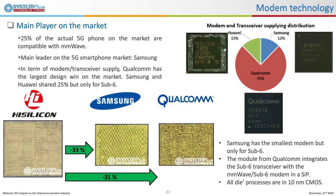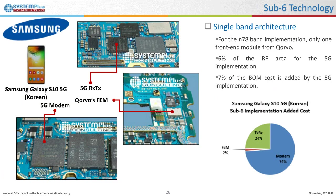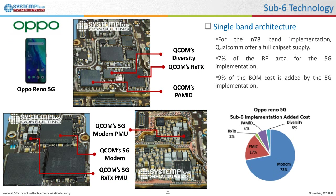Different suppliers mean different approaches. The Galaxy S10 carrier version is compatible with only one sub-6 band based on Samsung Exynos 5100 series as the modem. It integrates a dedicated transceiver and an integrated front-end module from Qorvo. In terms of area, it occupies 6% of the board, and in terms of cost, 7% of the bill of materials is related to 5G integration. The added cost is mainly due to the modem.